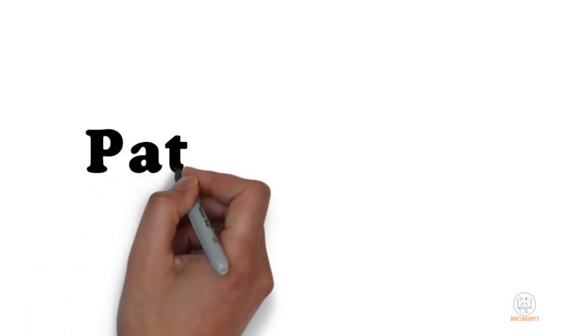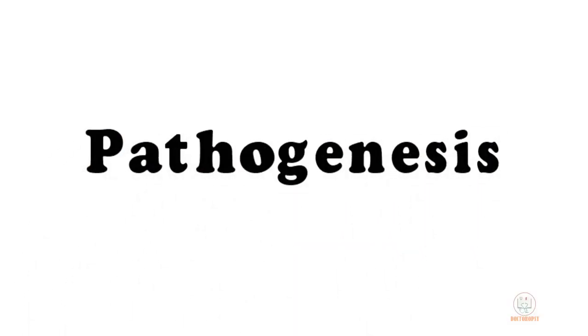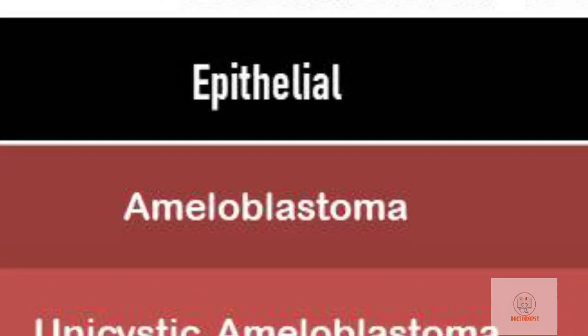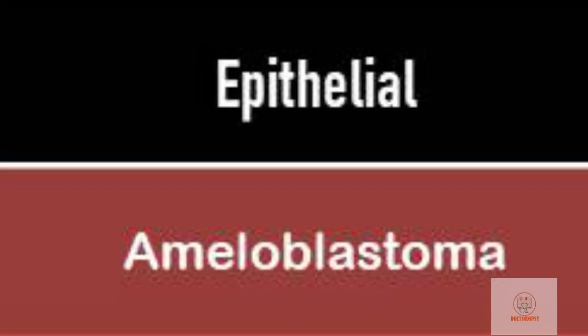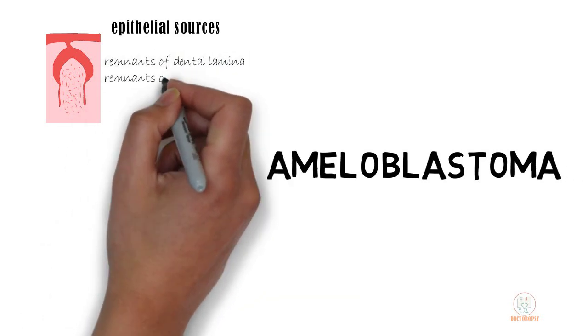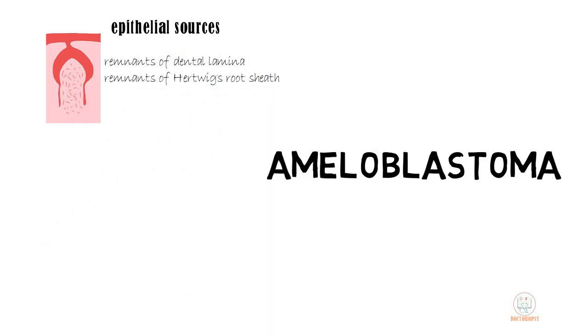Regarding its pathogenesis, in the classification of odontogenic tumors, ameloblastoma is classified in the epithelial group — that is, only the epithelial component is neoplastic and not the connective tissue. Ameloblastomas may be derived from various epithelial sources in the dental apparatus. Most commonly, it develops from the cell rests of the enamel organ, either remnants of the dental lamina or remnants of Hertwig's epithelial root sheath.